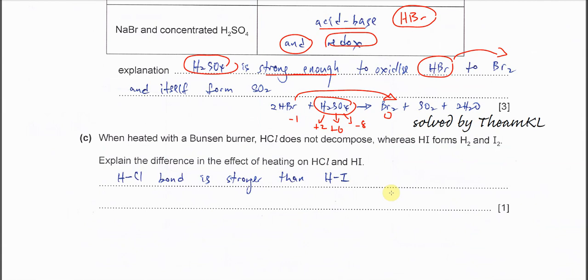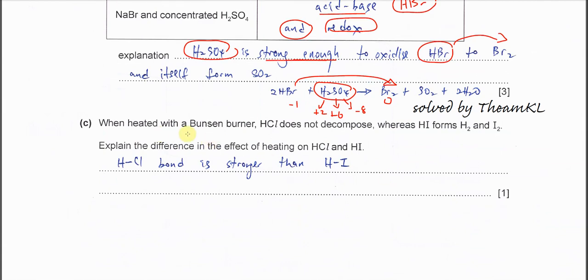Part C. When heated with a Bunsen burner, HCl does not decompose, but HI will form H2 and I2. It's because the HCl bond is much stronger than HI. The bond length of HCl is shorter, bond length of HI is longer, so this one is easier to break and this one is harder to break.